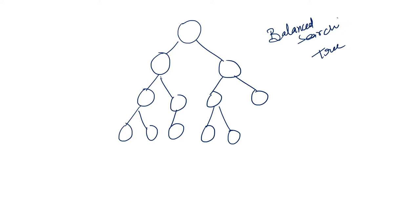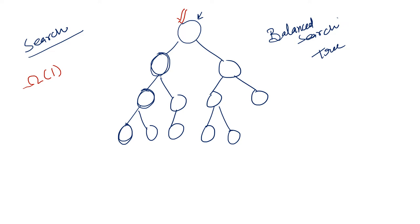Suppose we are starting with the search operation on the binary search tree. The search operation will lead us from the root node to some leaf node. In the best case I can find my search key at the root node, so the cost of this operation would be 1 or constant. But if we have to move from the root node to the leaf node, we travel a distance equal to the height of the tree. If the height of the tree is order of log n, we make the same number of comparisons.